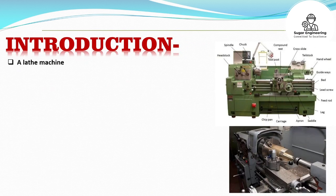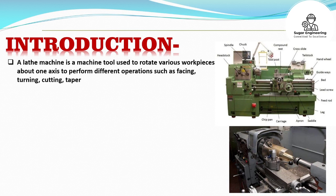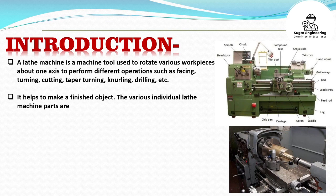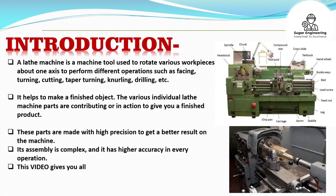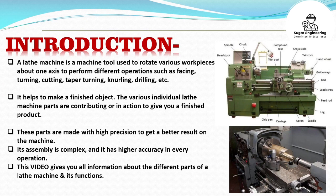A lathe machine is a machine tool used to rotate various workpieces about one axis to perform different operations such as facing, turning, cutting, taper turning, knurling, drilling, etc. It helps to make a finished object. The various individual lathe machine parts contribute to give you a finished product. These parts are made with high precision to get a better result. Its assembly is complex, and it has higher accuracy in every operation. This video gives you all information about the different parts of a lathe machine and its functions.